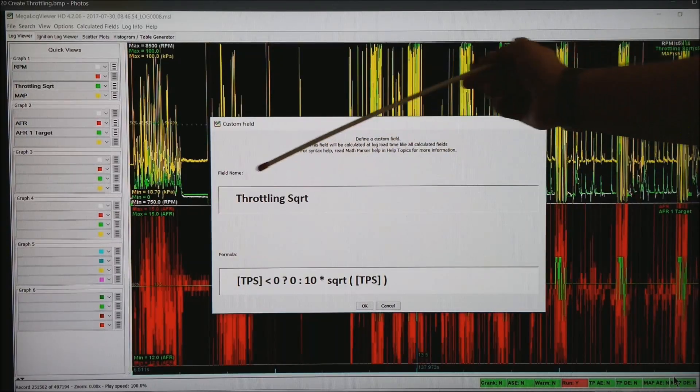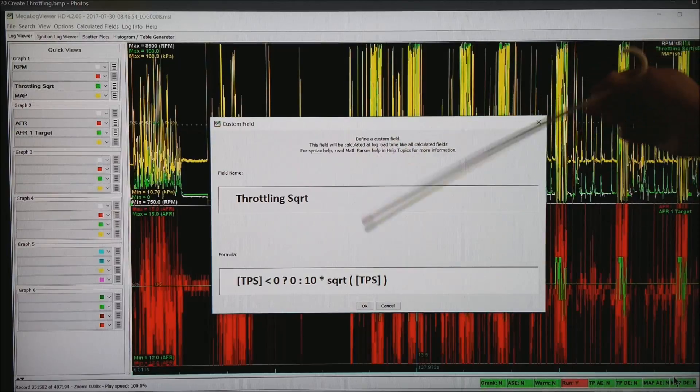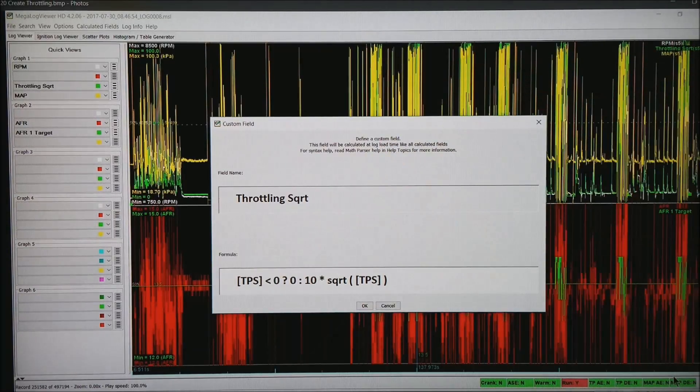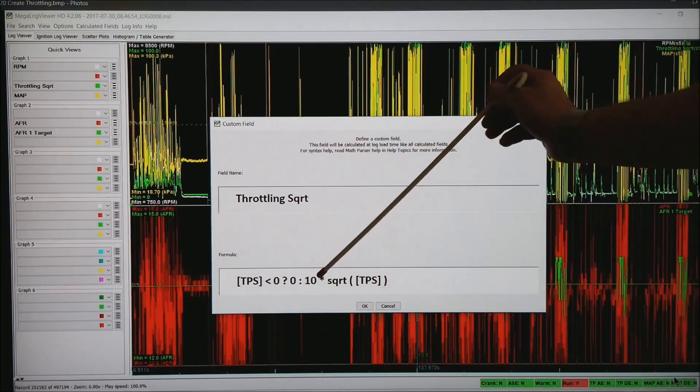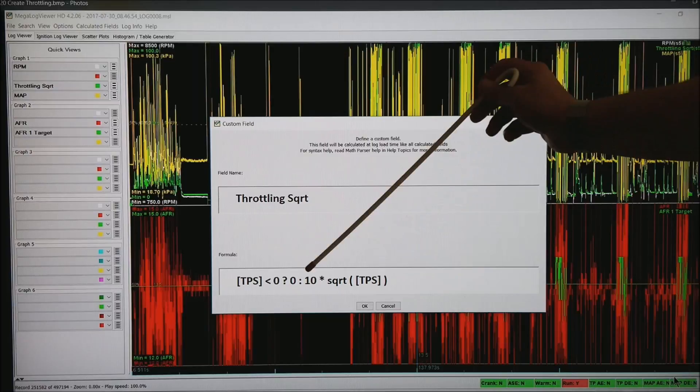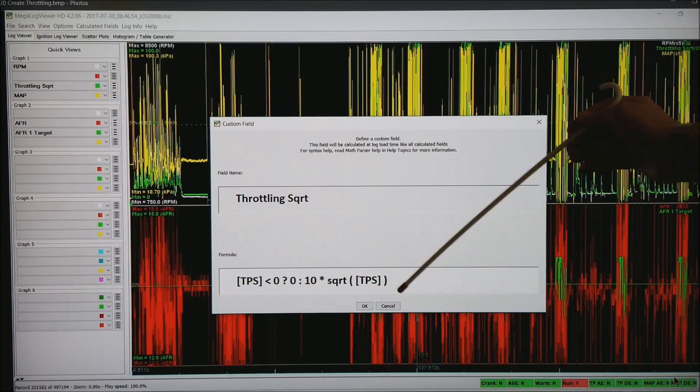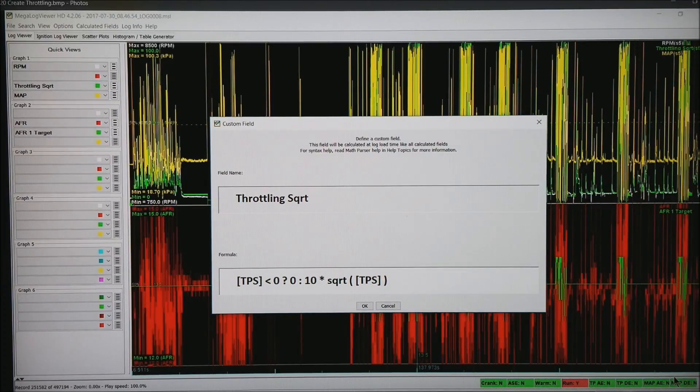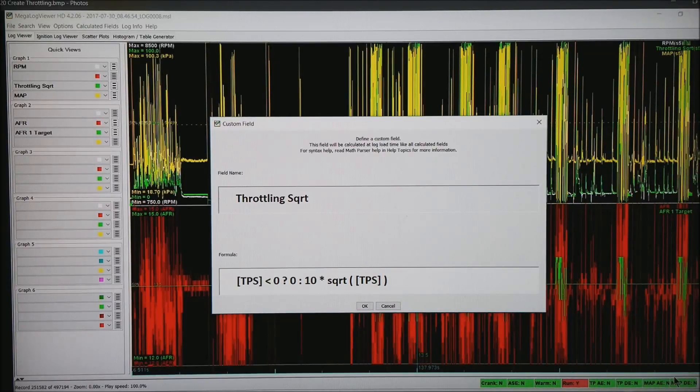And what I want to do is create one called throttling square root. That's just an arbitrary name. But what this does, it says if the TPS is less than zero, after the question mark, return a zero colon. Otherwise, I want to take ten times the square root of the throttle position sensor. And all these brackets are critical. Your TPS may have a slightly different name. Whatever the name coming in your data log is, that's what I want between the square brackets.